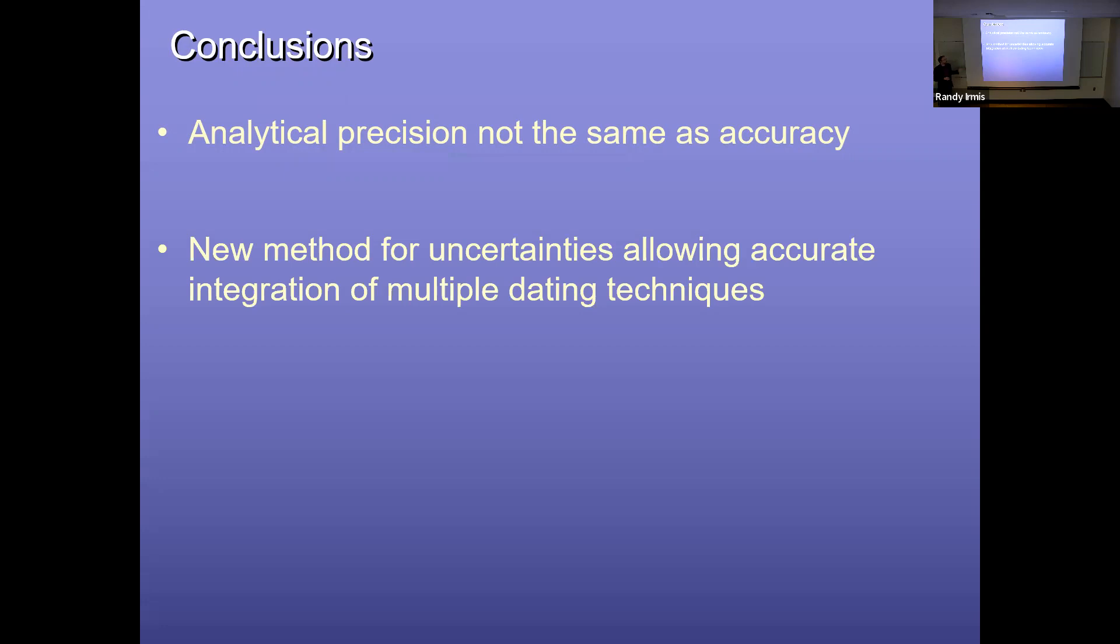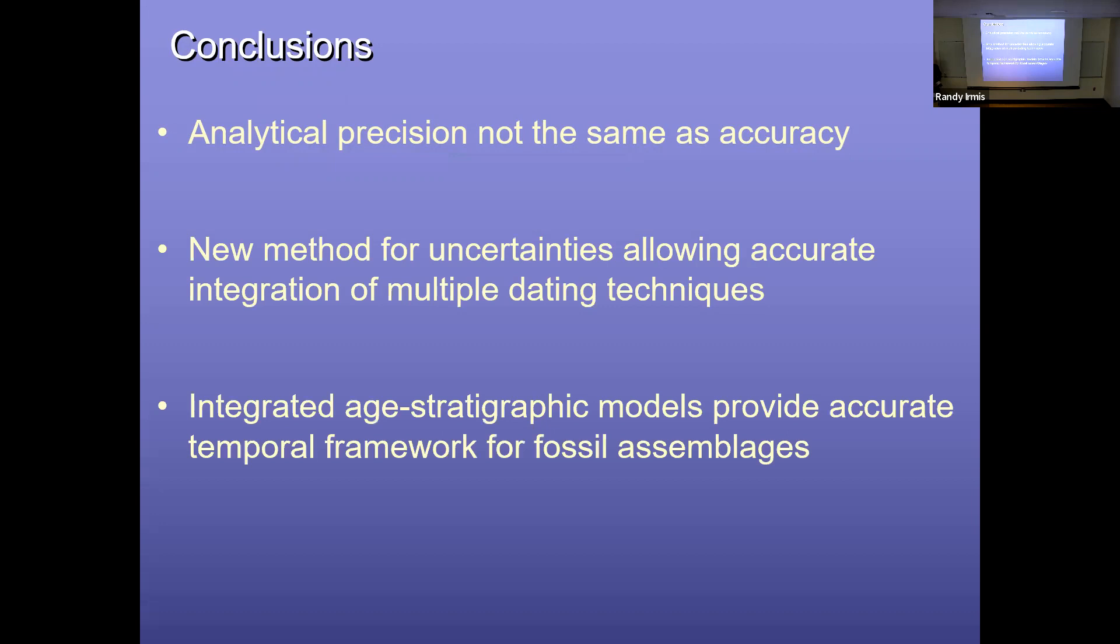So to sum up this part of the talk, I think it's important to always remember when you see an age with uncertainty, analytical precision is not the same as geological accuracy. And we've presented one possible approach to calculate uncertainties to extract accurate ages from these different dating techniques that seem to have different levels of precision, but also different levels of accuracy based on things like natural standards, lead loss, et cetera. And I think, you know, we're not the only people to say this, but these sort of integrated Bayesian age stratigraphic models are real powerful approach to extracting inferences about earth history from the stratigraphic record. And particularly for my work, when we're dealing with fossils and the paleoenvironmental record associated with it.